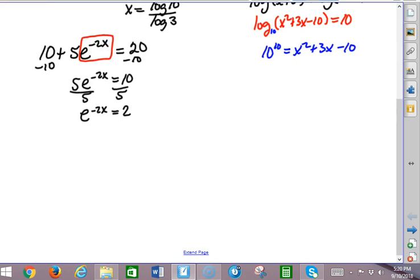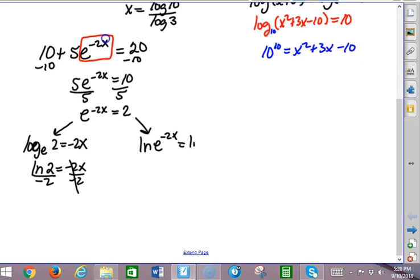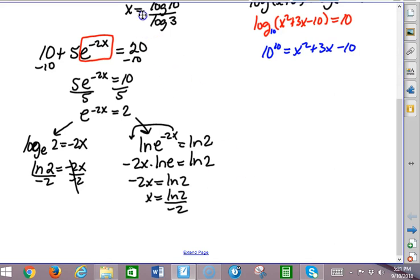Now, I'm in the place where I can do my logs. I can say, log base, log base e of 2 equals negative 2x, but I hope you're sophisticated enough to realize log base e is natural log. So, this is natural log of 2 equals negative 2x, divide by negative 2. There's your answer. Or, take the log of both sides. Natural log of e to the negative 2x equals natural log of 2. I can bring this out front. Negative 2x times natural log of e equals natural log of 2. The nice thing about using natural log of e is natural log of e is just 1. So, I have negative 2x equals natural log of 2, x equals natural log of 2 over negative 2, and then you've got your answer.